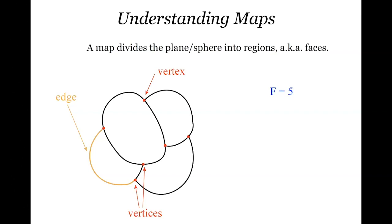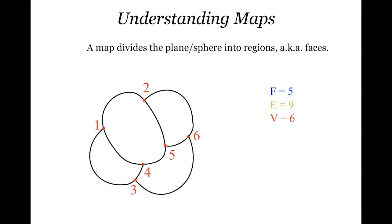If you count up all the edges on this particular map, being careful to always count them as going from one vertex to another, you'll find there are nine edges, and six vertices. What I'm going to do with these is compute V minus E plus F — where V is vertices, E is edges, and F is faces. That's the same as F minus E plus V. It kind of goes up in dimension: zero-dimensional points, one-dimensional edges, two-dimensional faces. For this particular map, V minus E plus F gives you two.